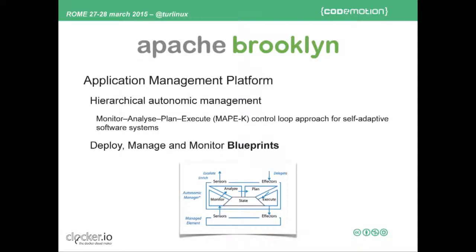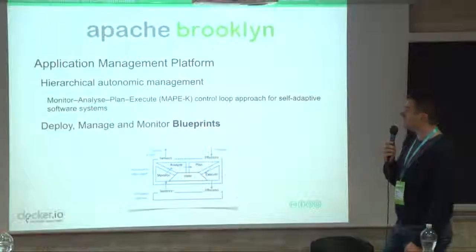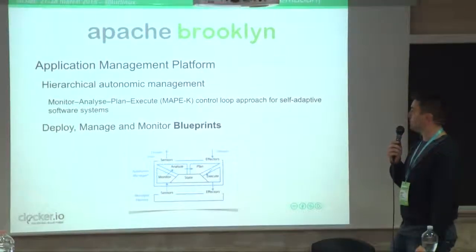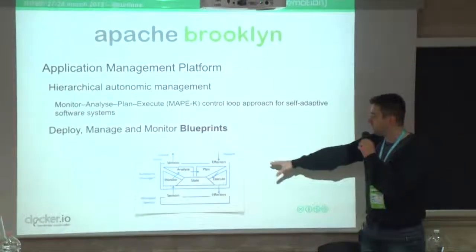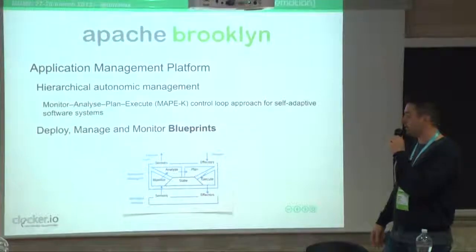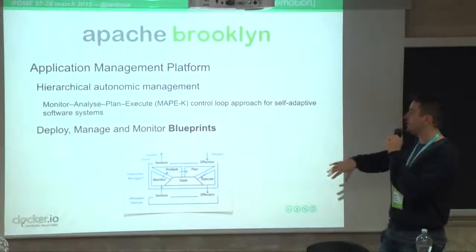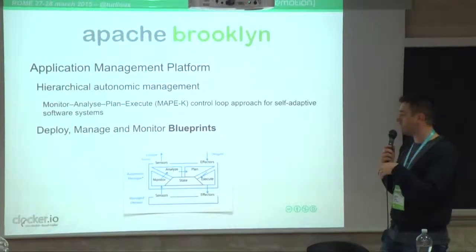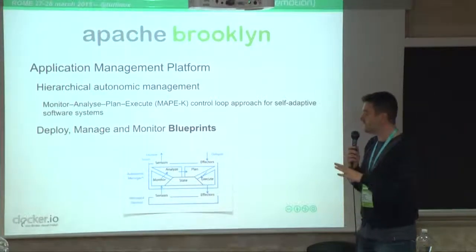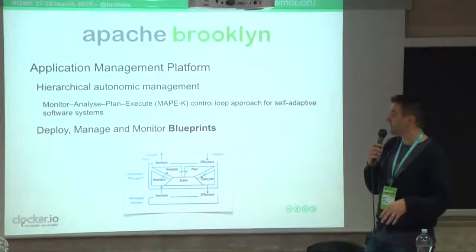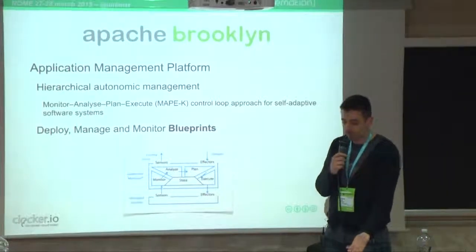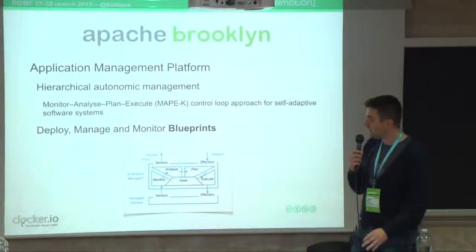The design of Apache Brooklyn is around the autonomic management of software systems. If you're familiar with this control loop approach for self-adaptive systems, this is the kind of thing you usually see in an autonomic system — an autonomic manager described with the common monitor, analyze, plan, execute states, which exposes sensors and effectors, so that using values from the sensors you can trigger effectors to modify the status of the autonomic manager.